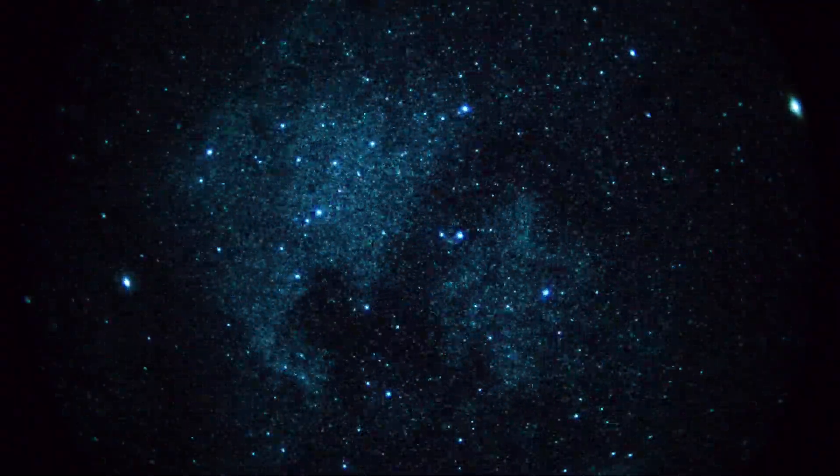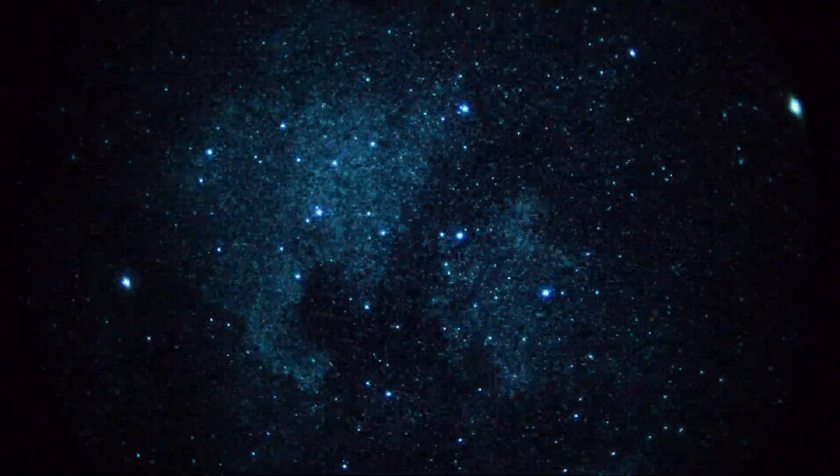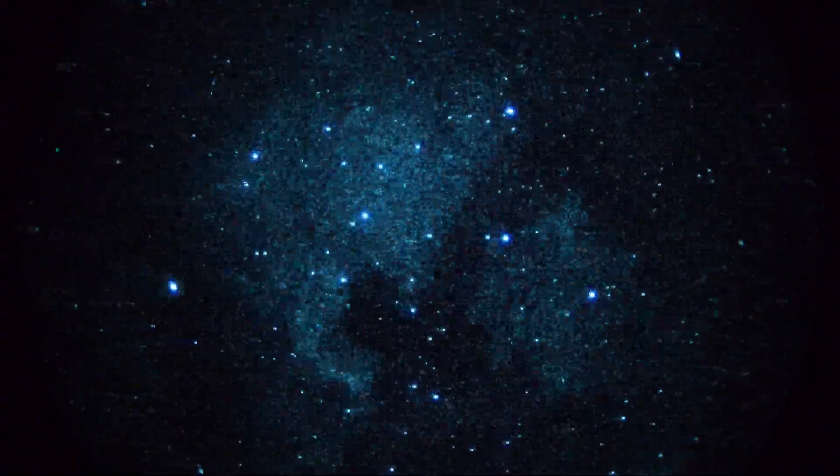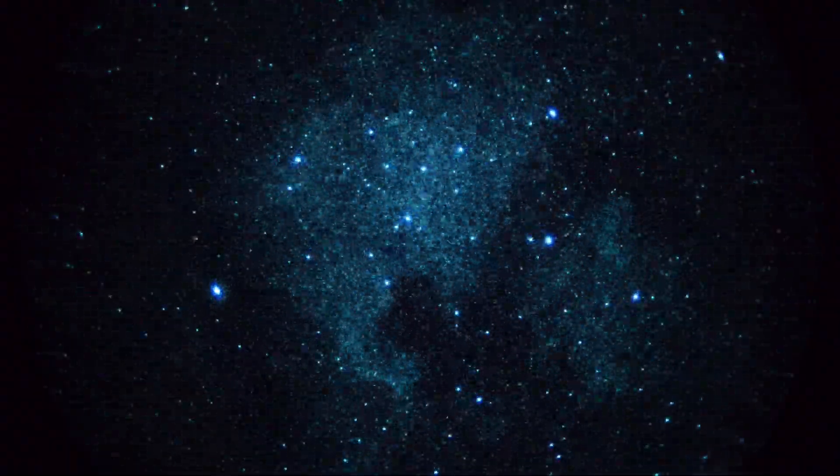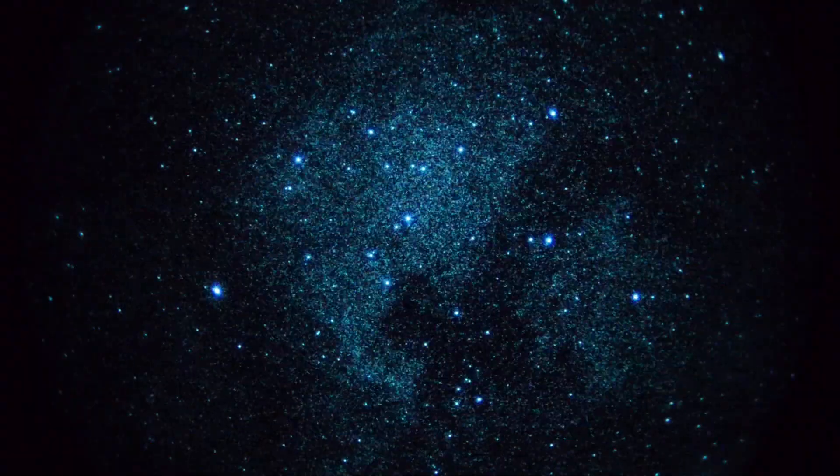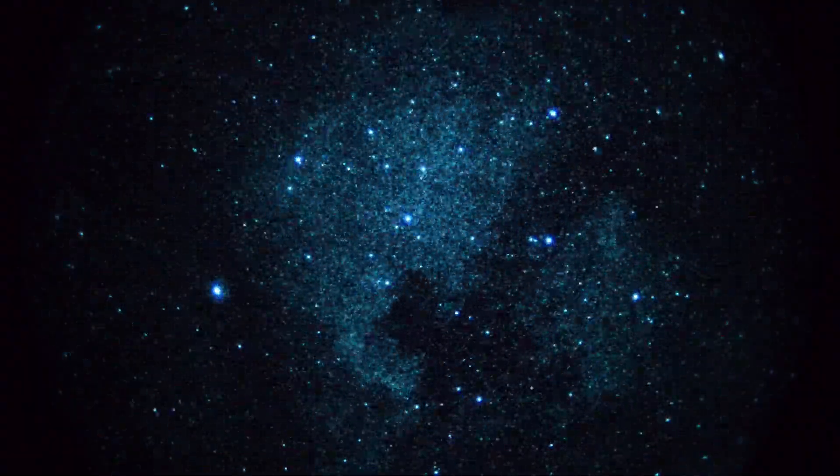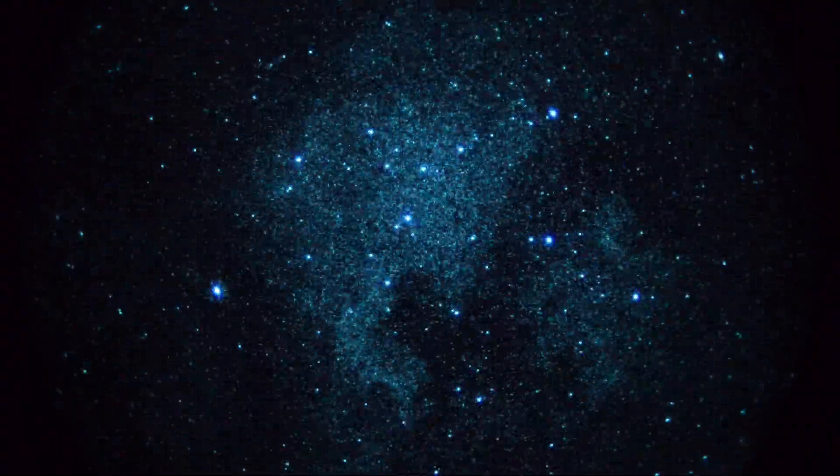Got NGC 7000 on the left and the Pelican Nebula on the right in more or less real time. The camera is a Panasonic GH3 set to 1/30th of a second shutter, ISO 6400.